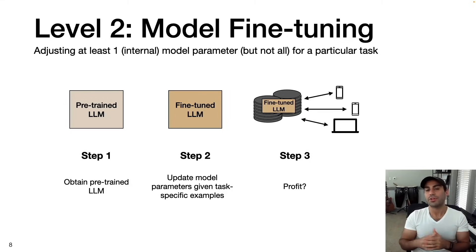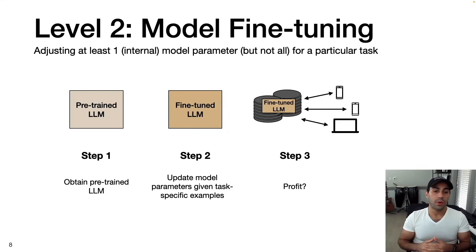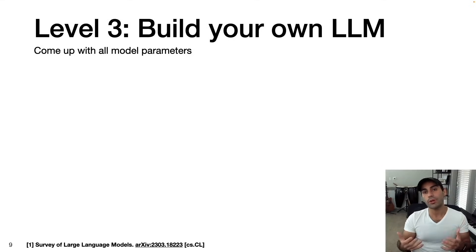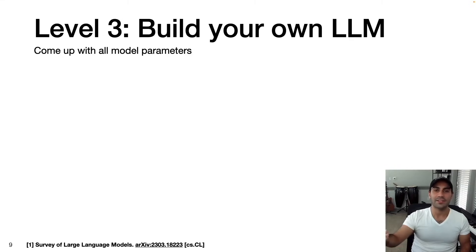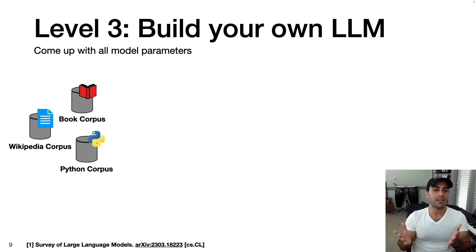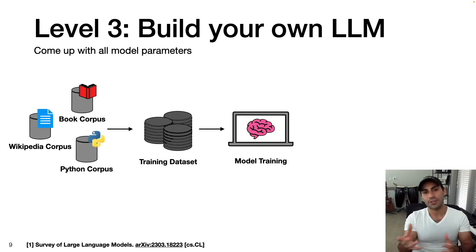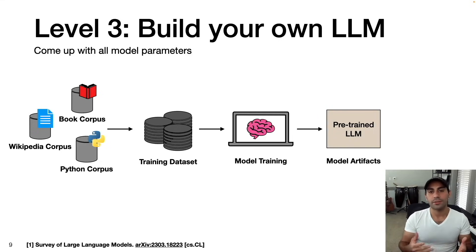However, if you're a large organization where security is a big concern and you don't want to use open source models or send data to a third party via an API — and maybe you want your large language model to be very good at a specific set of tasks, customize the training data, and own all the rights for commercial use — then it can make sense to build your own large language model. Here I define it as coming up with all the model parameters from scratch. First, we get our data — a book corpus, a Wikipedia corpus, a Python corpus — billions of tokens of text. Then you pre-process and refine it into your training dataset. Then you do model training through self-supervised learning, and out of that comes the pre-trained large language model, which you can use as a starting point for level two.